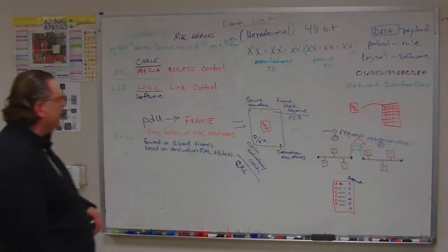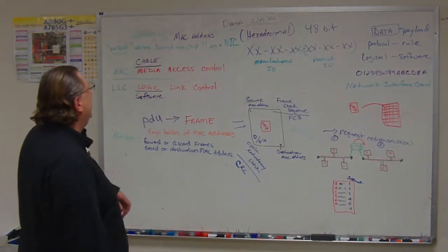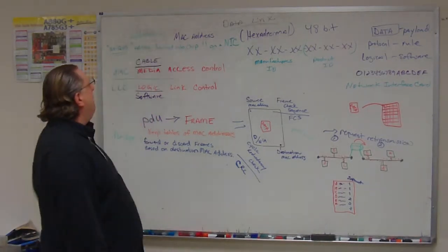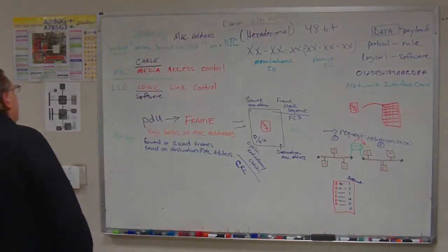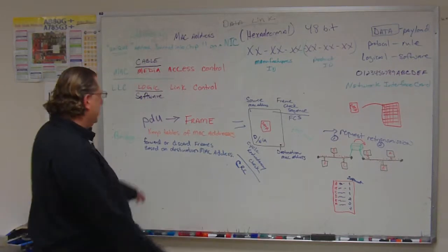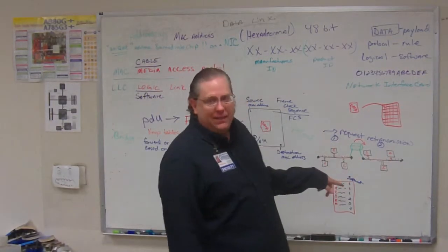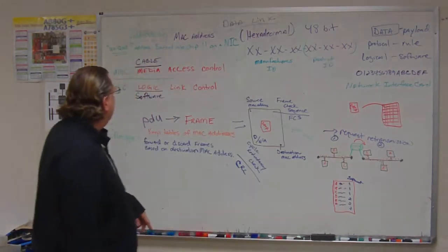Alright, so before the break, we have a quick little recap. We're talking about the data link layer. The addressing of the data link layer is the MAC address. The MAC address allows us to control access to the media or to the cable. Information is accepted or denied based on that MAC address by the receiving computer.